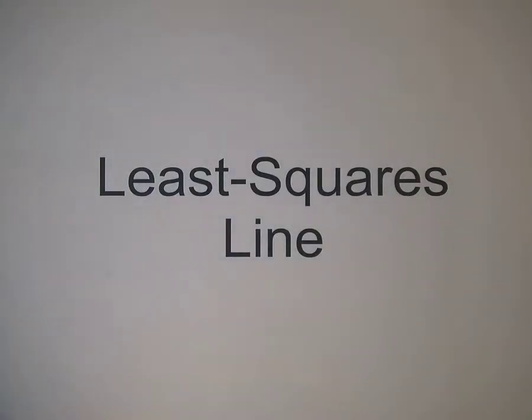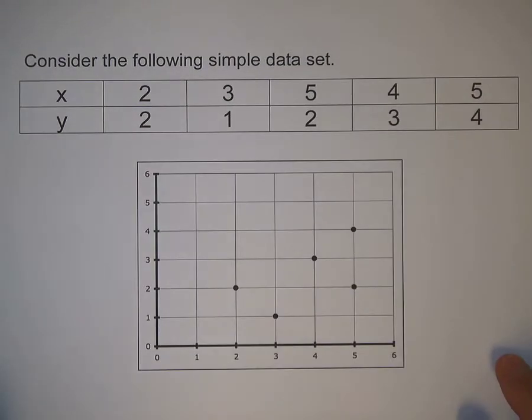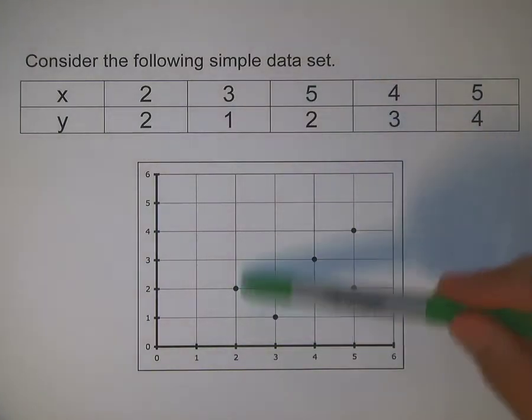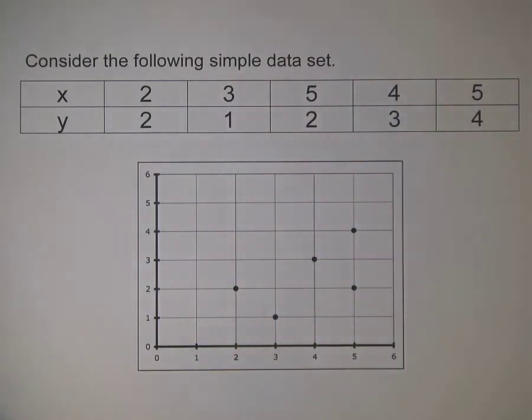Hi. This tutorial covers the least squares line. Let's start with some data. This is a pretty simple data set with only five values. Here's the raw data and here's the data as a scatter plot.